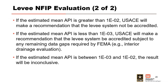Based on the risk assessment results, USACE will provide an accreditation recommendation. If the estimated mean API is greater than 1×10⁻², USACE will recommend the levee system not be accredited. If the API is less than 1×10⁻³, USACE will recommend accreditation subject to any remaining data gaps required by FEMA, such as interior drainage. If the API is between 1×10⁻³ and 1×10⁻², the results will be inconclusive and subject to further evaluation or analysis.